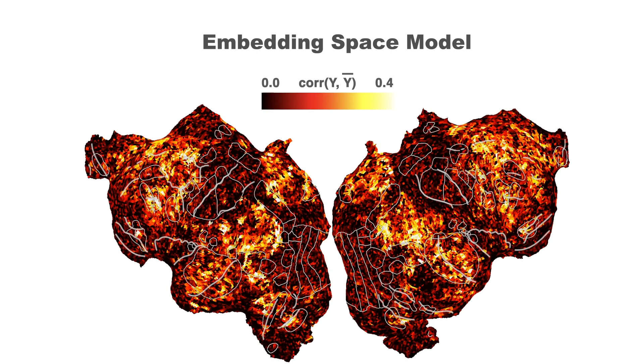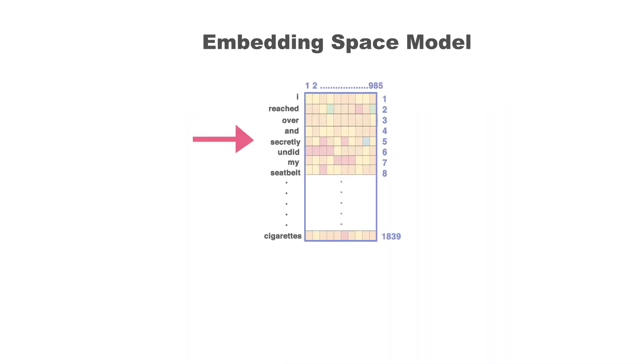However, there is a catch. This model extracts a vector for each word in the story independent of the previous words. But we know that language understanding is not based on individual words.